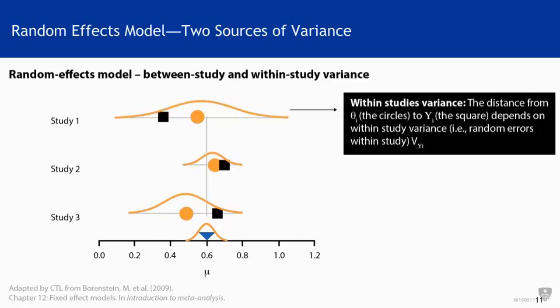Because the circles — the true effects in each study — don't line up together, there is a distribution, and that is the between-study variance. Under a random effects model, we have to capture both sources of variance: the within-study variance as well as the between-study variance.